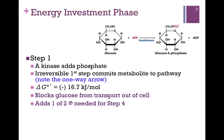Step 1 is catalyzed by the enzyme hexokinase. We saw this enzyme briefly in an earlier chapter as an example of the induced-fit model of binding substrate. We also looked at the overall reaction as an example of a coupled reaction. The phosphorylation of glucose to form glucose-6-phosphate is unfavorable, but we couple that with the favorable hydrolysis of ATP so that the overall reaction is highly favorable — the standard delta G is negative 16.7 kilojoules per mole. This is one of our three possible flux control points because of that large favorable change in delta G.